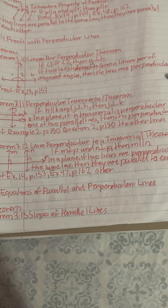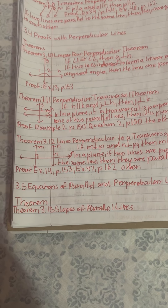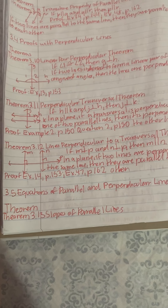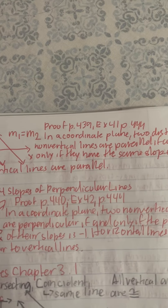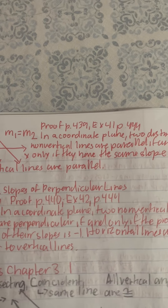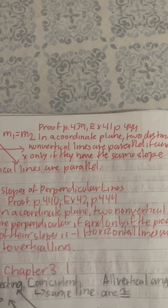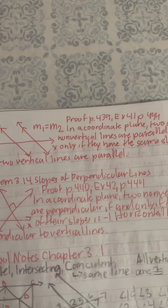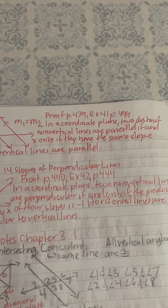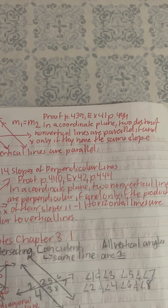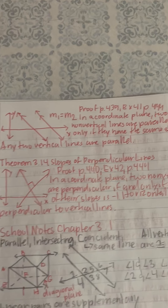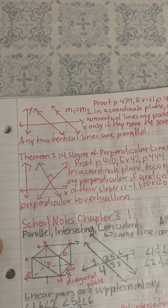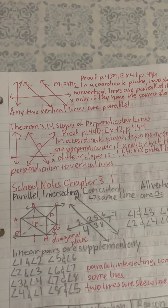3.5 Equations of Parallel and Perpendicular Lines. Theorem 3.13, Slopes of Parallel Lines: In a coordinate plane, two distinct non-vertical lines are parallel if and only if they have the same slope — M1 equals M2. Any two vertical lines are parallel. Proof. Example: P1439, X4, D1, P144.